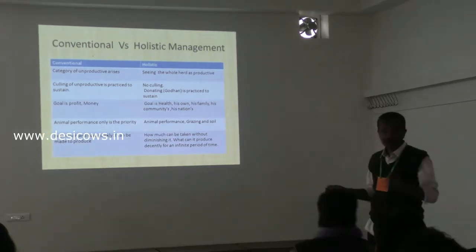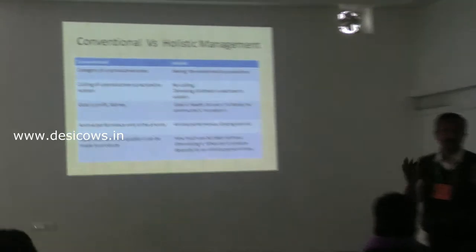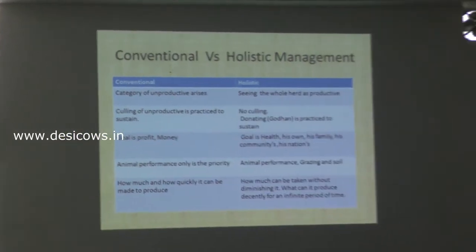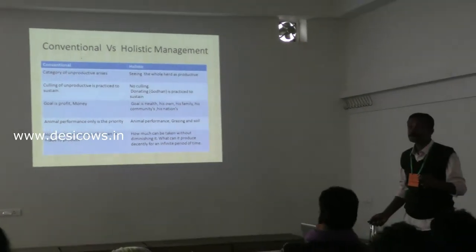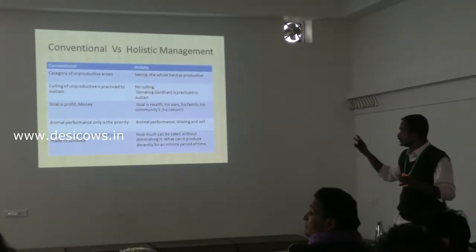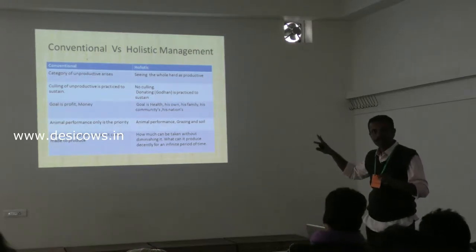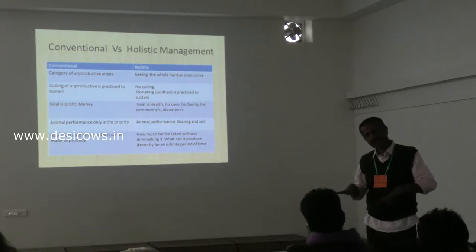But in holistic farming, you see the whole herd as a unit. We want that to grow. That is one difference. Whether you are talking about the cow herd or the micro herd, it applies on cows actually, but you can apply it anywhere. You can use the same thing, you can apply it anywhere.